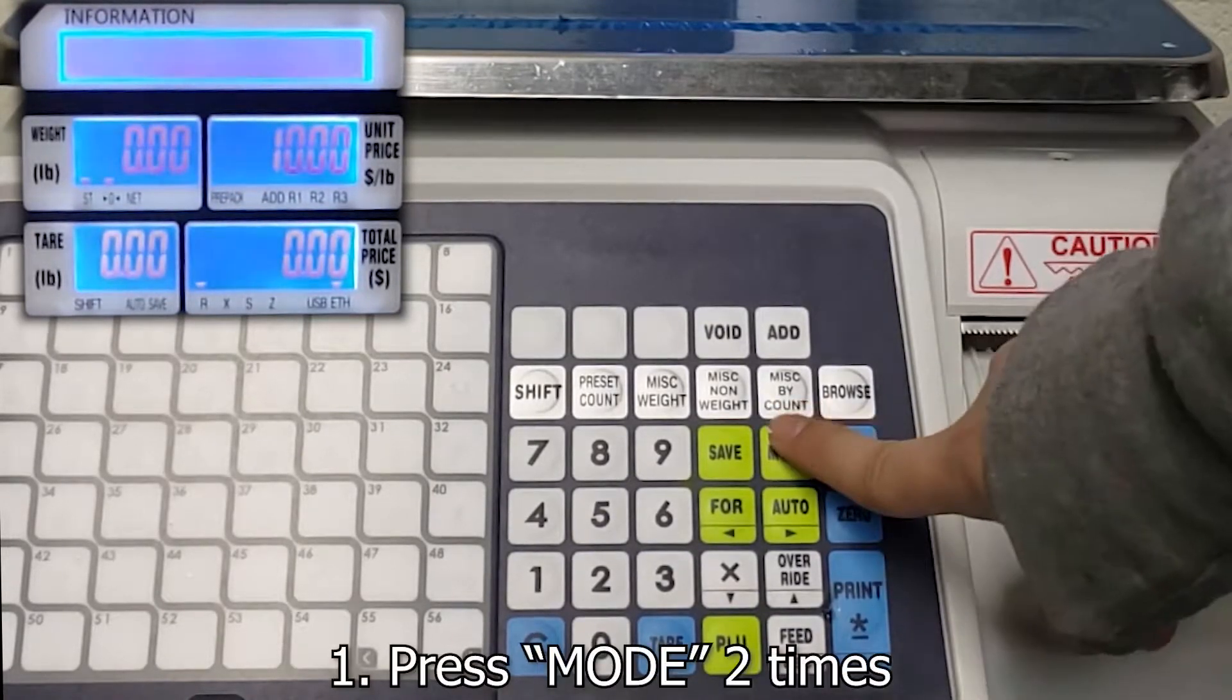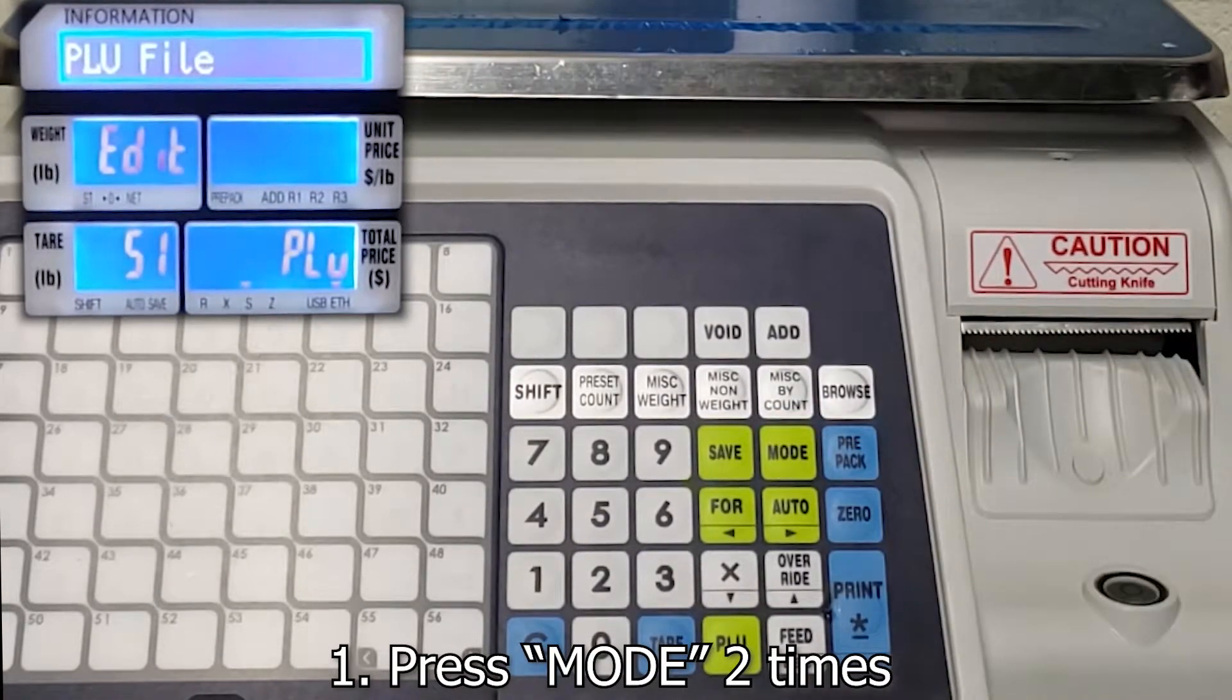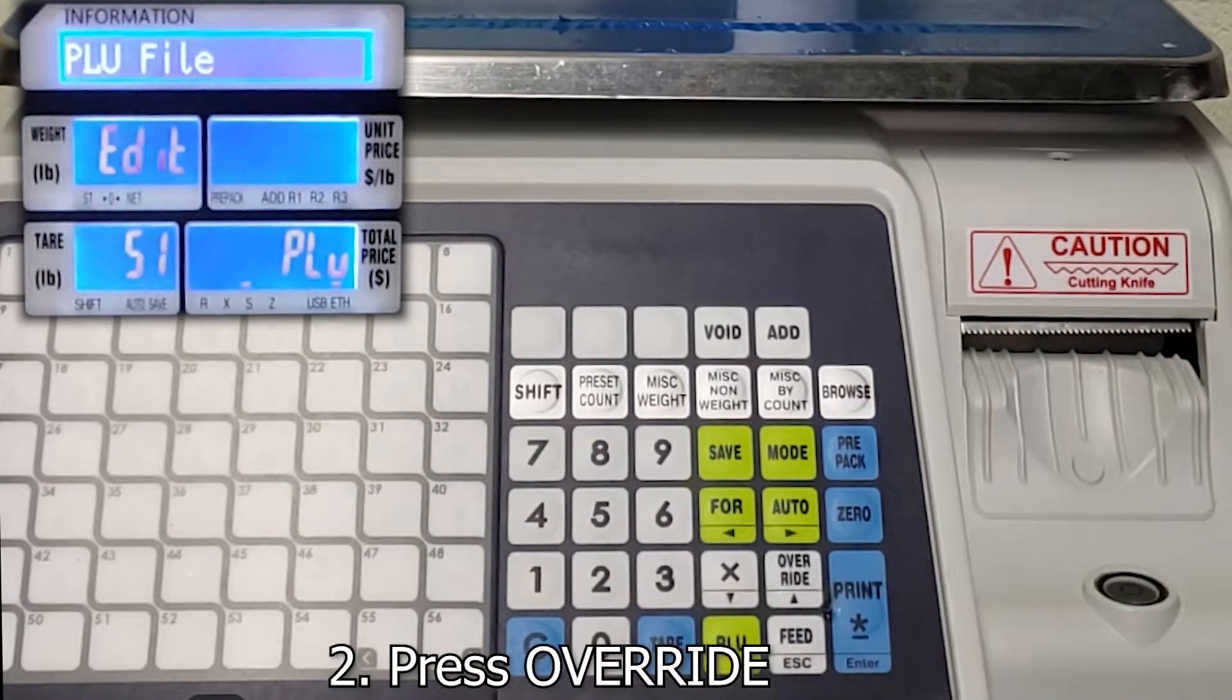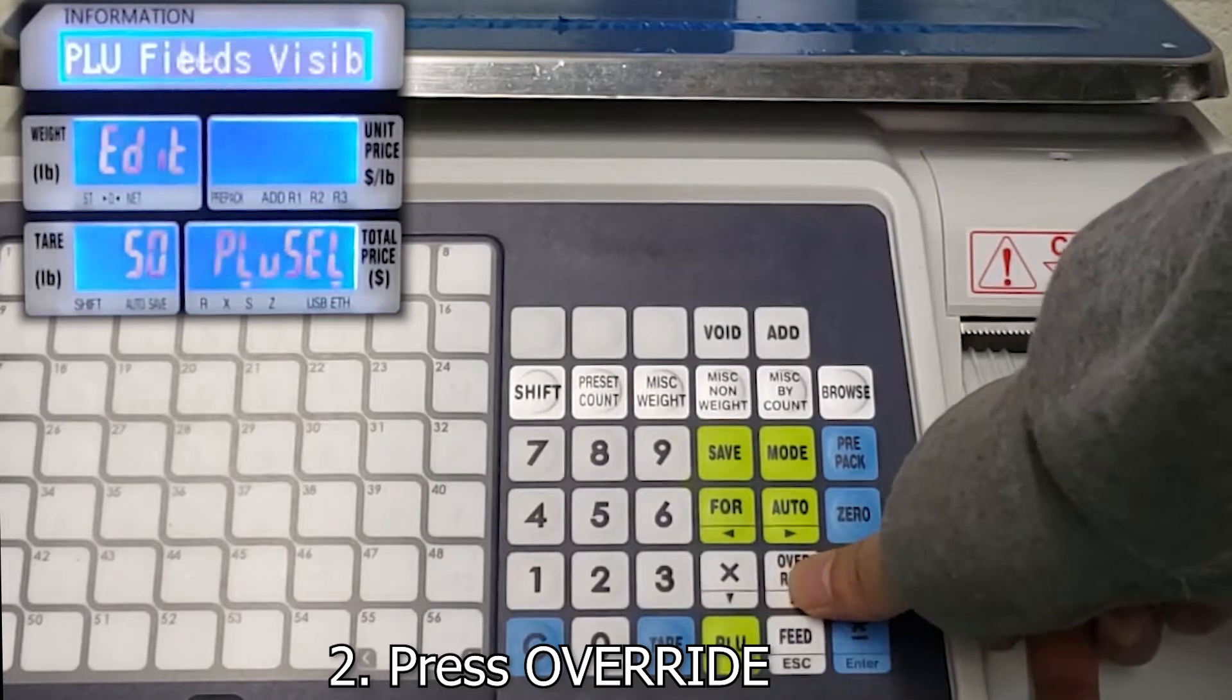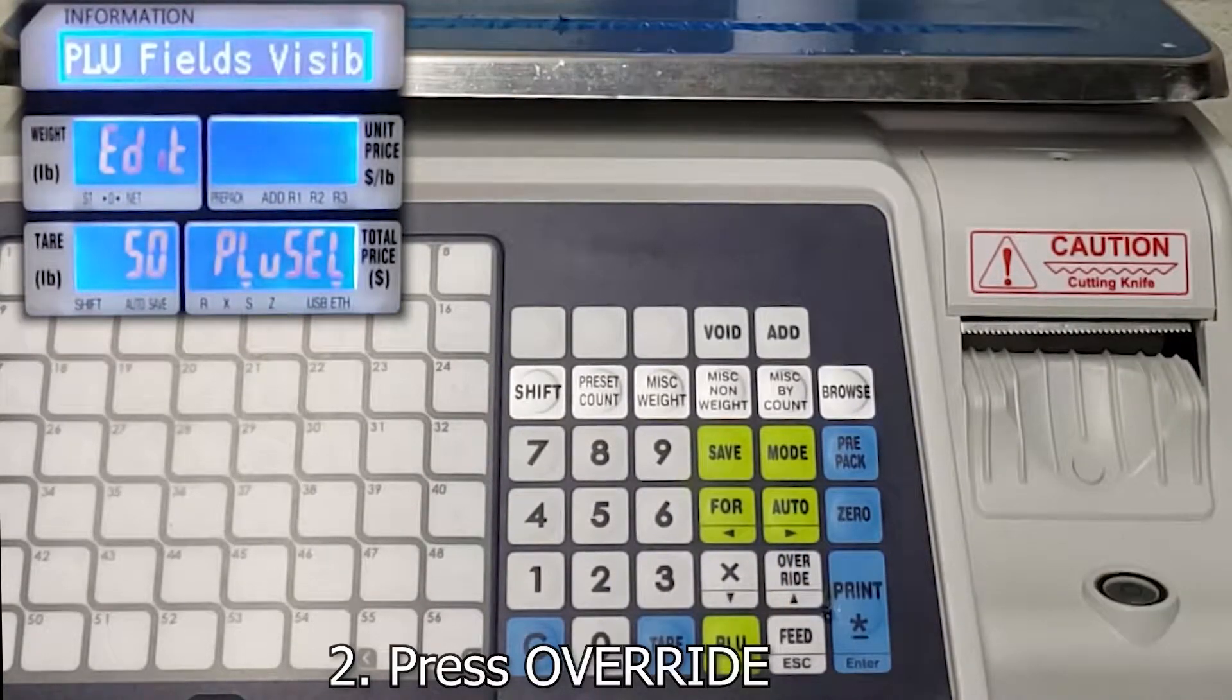So I'm just going to exit here and on the main screen, you want to press mode two times. After you see PLU file and S1 under tear, you press override once and you'll see S0 with PLU fields visible.